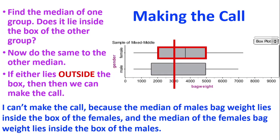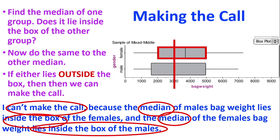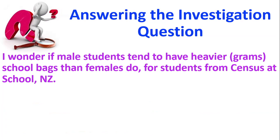So I'm going to say that I cannot make the call because my median of the male bag weight lies inside the box of the female and the median of the females lies inside the box of the males. So here I'm giving the justification, which is our merit. The because is our merit. So we cannot make the call for this.